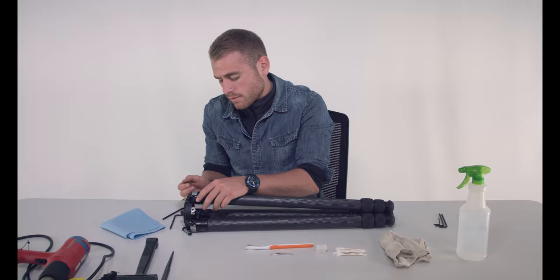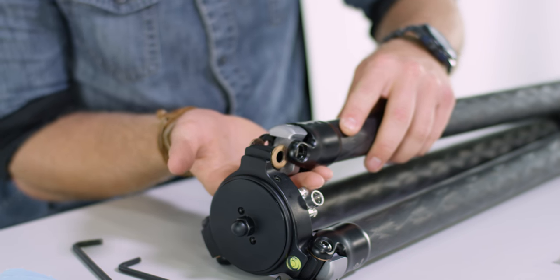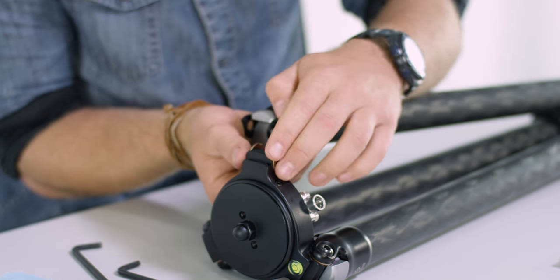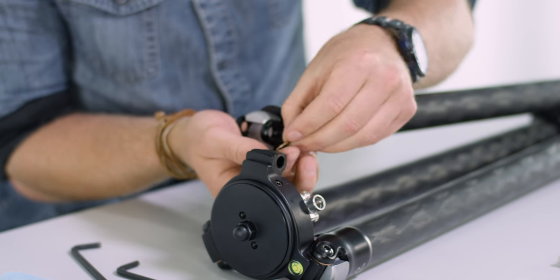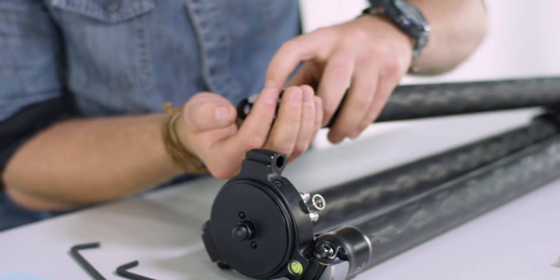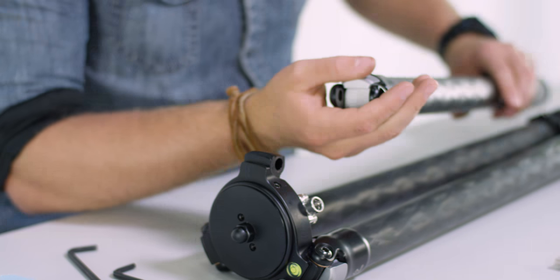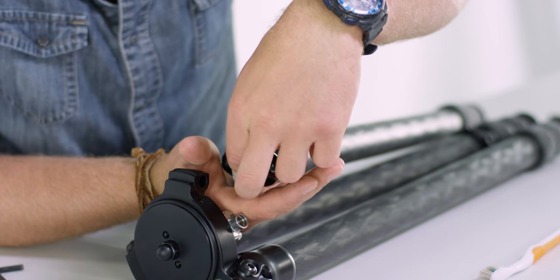Next you'll be removing the leg piece. Be ready to catch the washers. Once you remove the leg piece you can take off the pull tab.